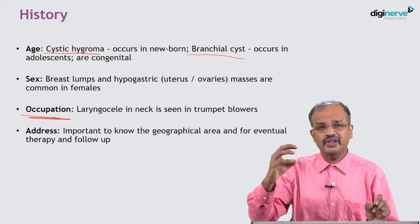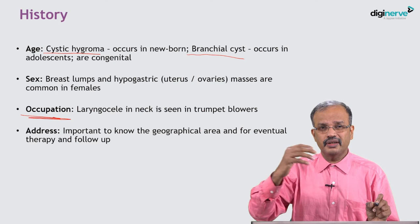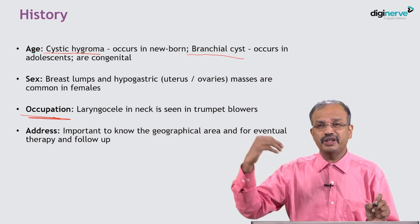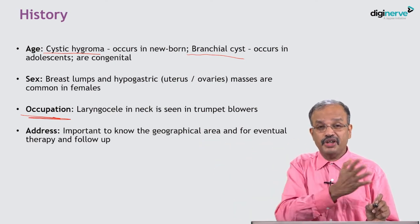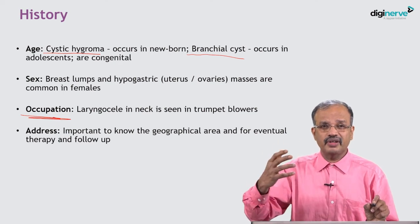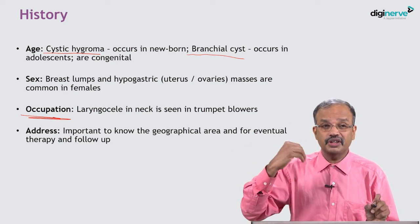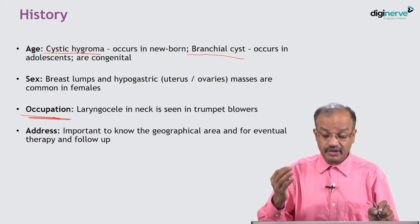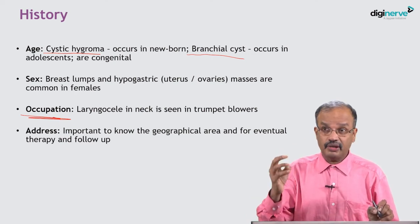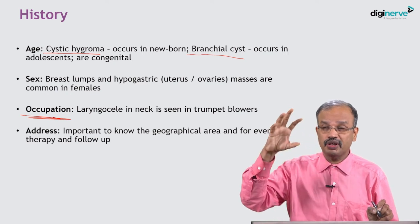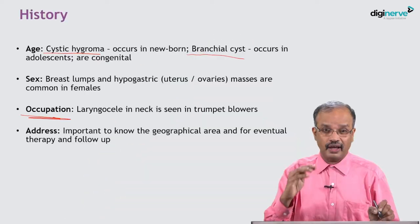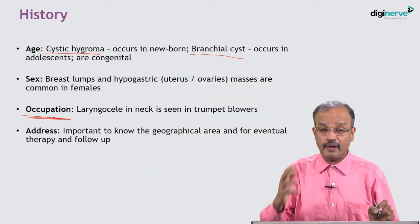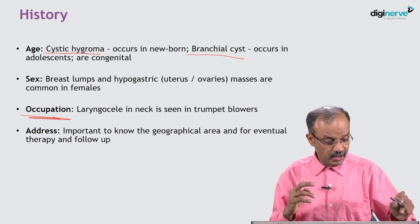Address is also relevant because certain diseases occur in certain geographical areas. For example, thyroid swelling is more common in interior and coastal regions, and lymphedema due to filarial disease occurs in certain endemic areas. Knowing where a patient is from gives you a geographical idea and helps you correlate why a particular disease is resulting in that patient.